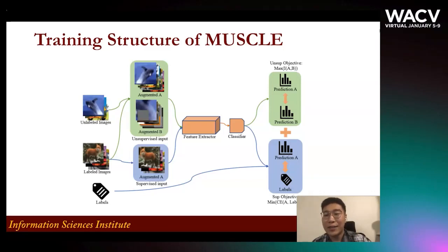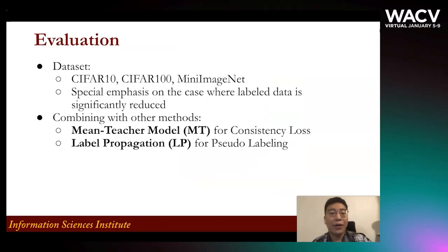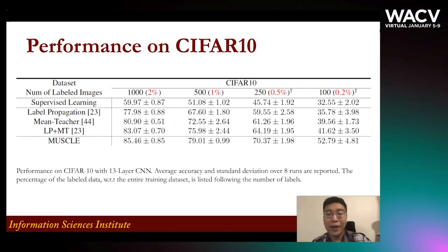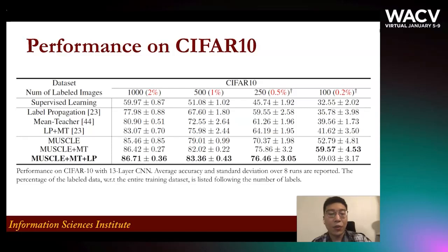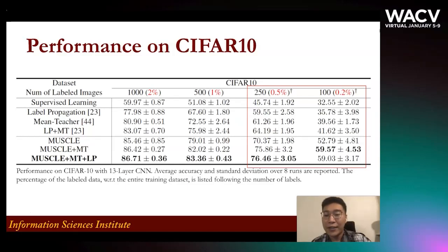Our final objective is simply adding the unsupervised objective and supervised objective together. We evaluated our methods on three benchmark datasets: CIFAR-10, CIFAR-100, and Mini-ImageNet, with special emphasis on the case where labeled data is significantly reduced. For showing MUSL can be combined with other methods for further performance increase, we select mean-teacher for consistency loss and label propagation for pseudo-labeling. On CIFAR-10, MUSL itself achieves very good performance, and when combined with mean-teacher or mean-teacher plus label propagation, performance increases further. When labeled data is significantly reduced, the benefits of MUSL are further revealed and the performance boost increases.